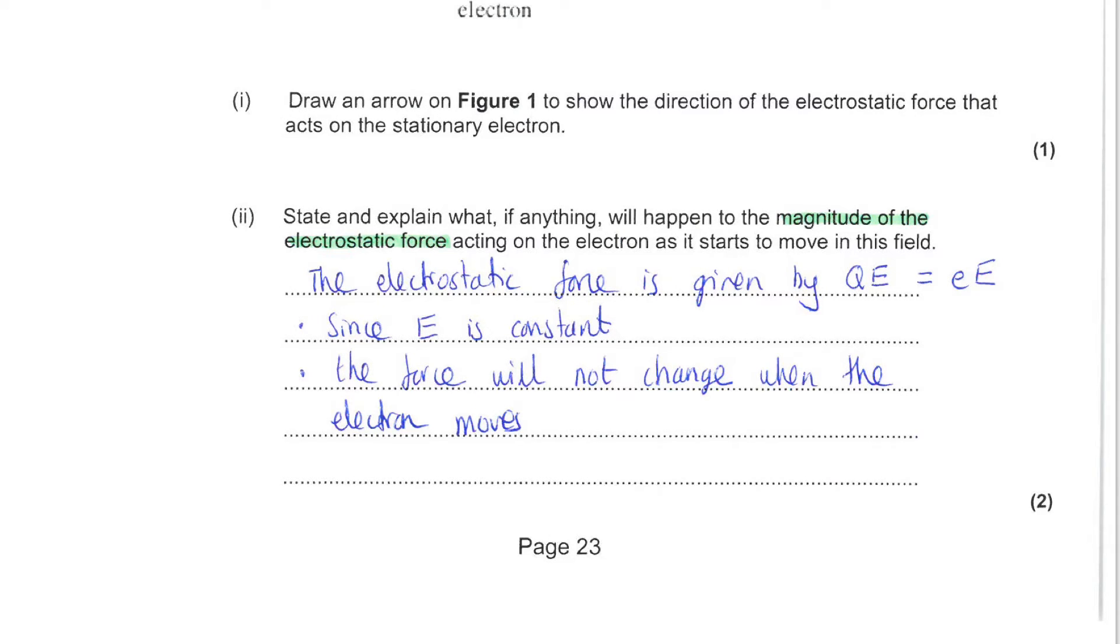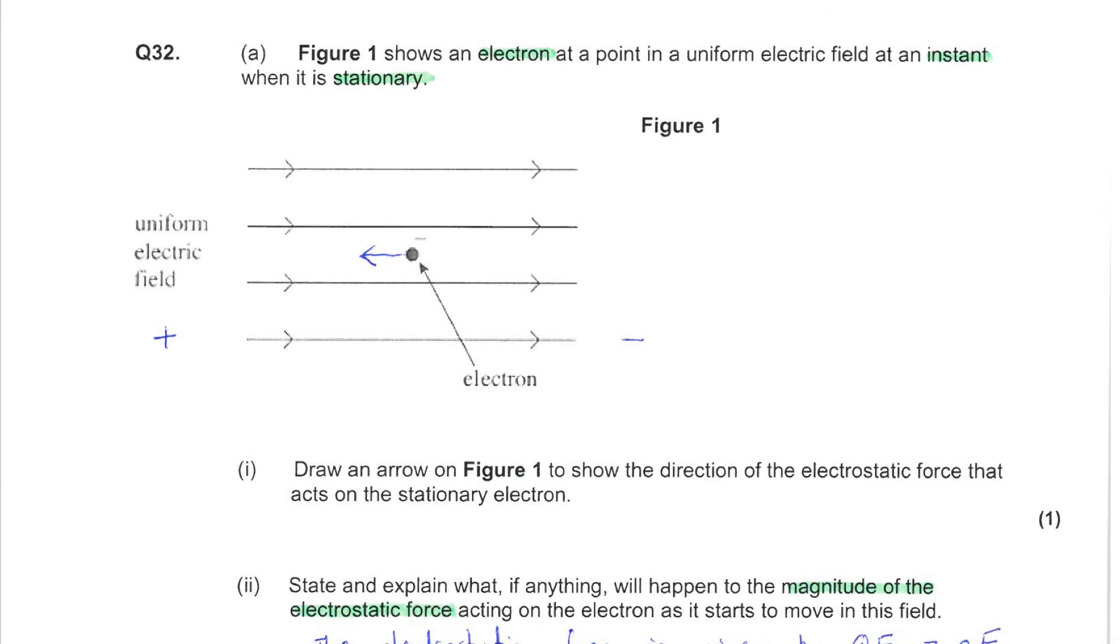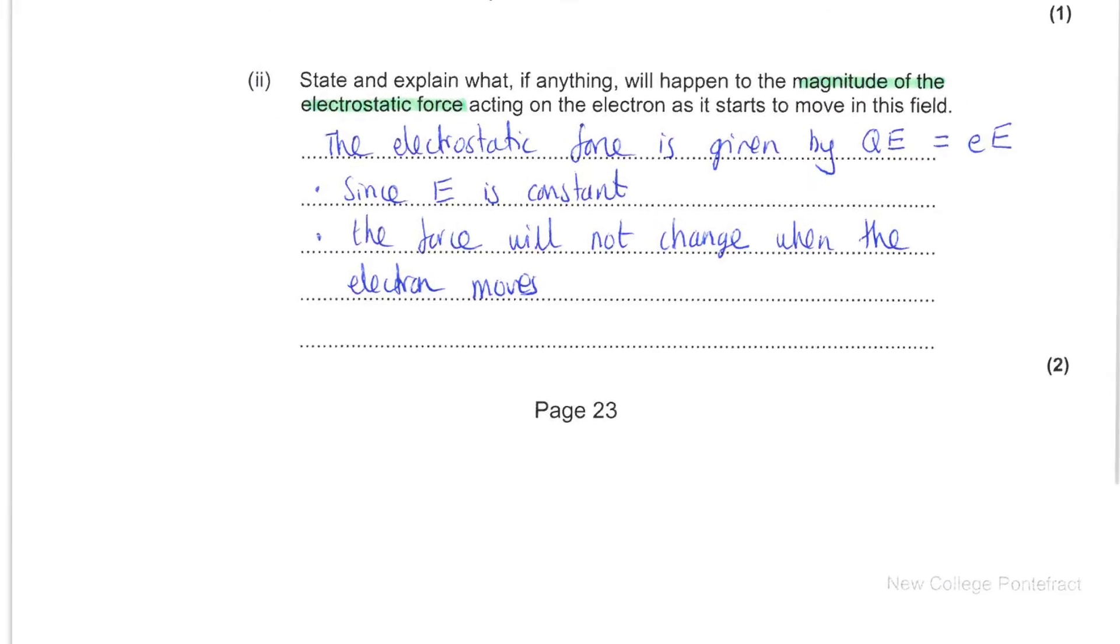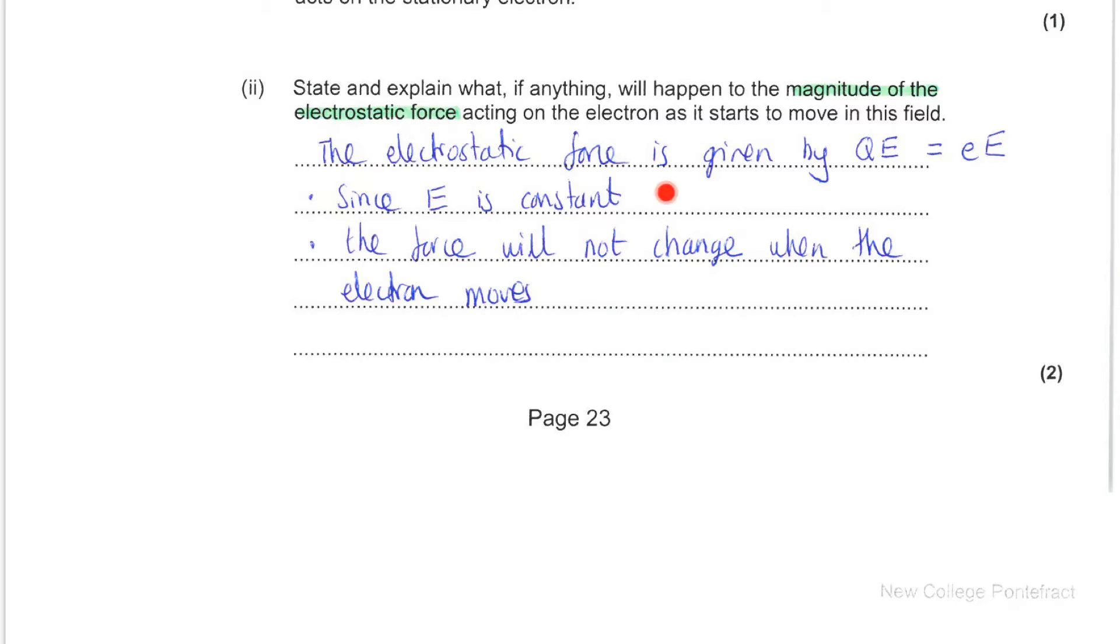Next, you are asked to state and explain what will happen to the magnitude of this electrostatic force acting on the electron as it starts to move in this field. If you think about equations you know to do with electrostatic force, you should remember that it is equal to the charge times the field strength. In this particular case, that would be the charge on the electron multiplied by the electric field strength. Now you were told in the question that this was a uniform electric field, so E must be constant. Since E is constant, the force will not change when the electron changes its position within this field.